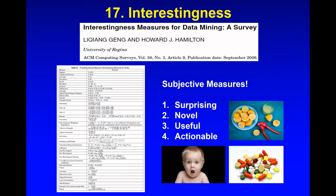One of my favorite areas is interestingness. We often don't pay enough attention to subjective measures, but these are ultimately what we're most interested in. Is the result surprising? This is why we do machine learning rather than standard parametric statistical methods — we're looking for surprising results that would otherwise be missed. Is the result novel? Is the machine learning model useful? And is it clinically actionable? I think we need to build in more of these subjective measures into our machine learning analyses.